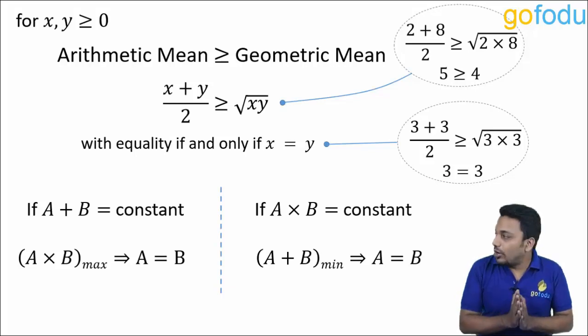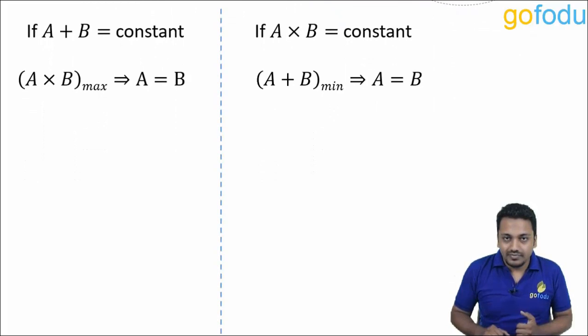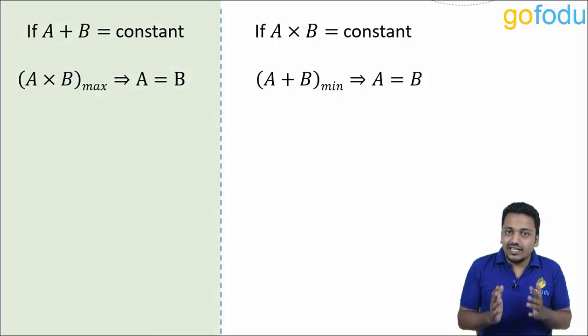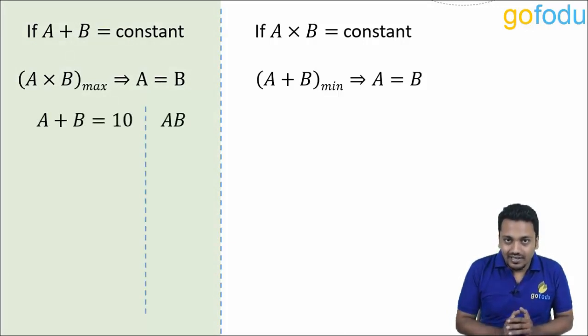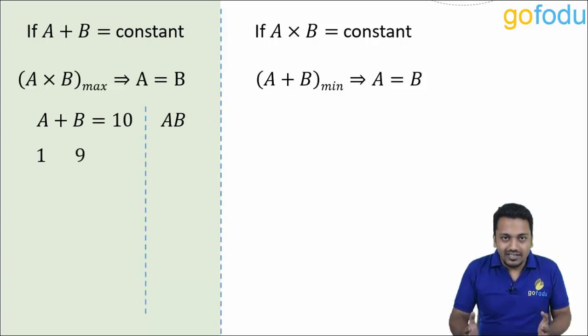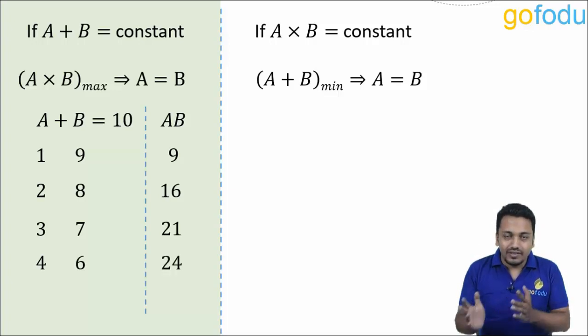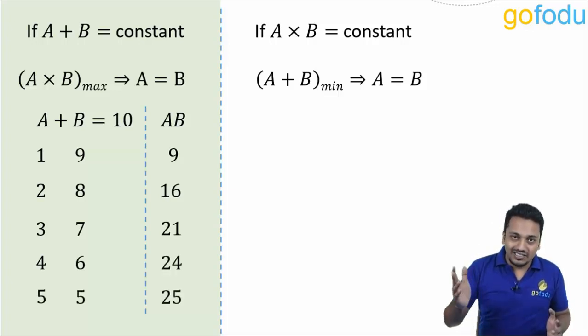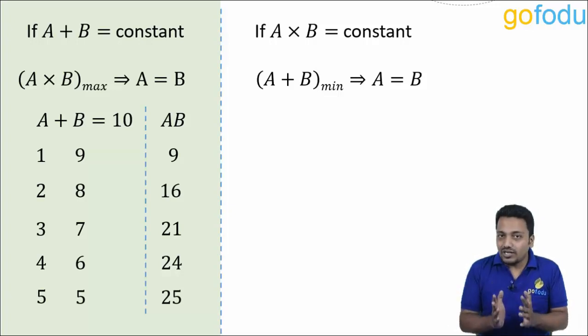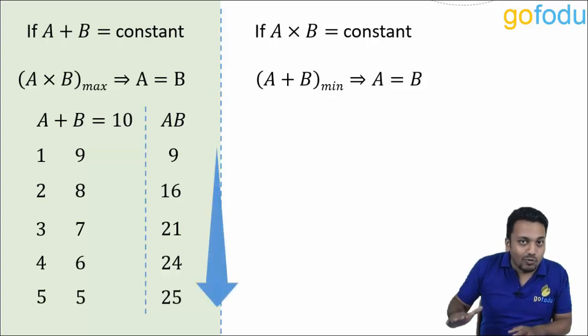Now let's verify these points using values. A plus B is constant. So let's say A plus B is 10. If A is 1, B will be 9, their product AB will be 9. If A is 2, B will be 8, AB will be 16. A is 3, B is 7, AB is 21. A is 4, B is 6, AB is 24. A is 5, B is 5, AB is 25. You see the product AB is increasing as we go down and it is maximum when A is equal to B.